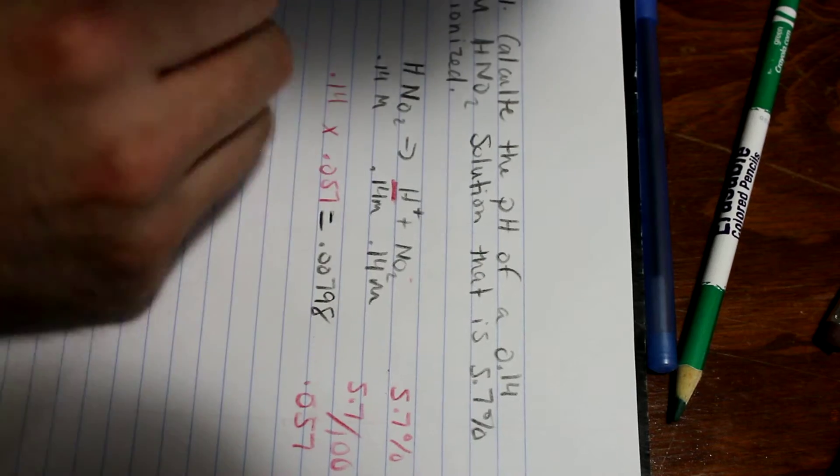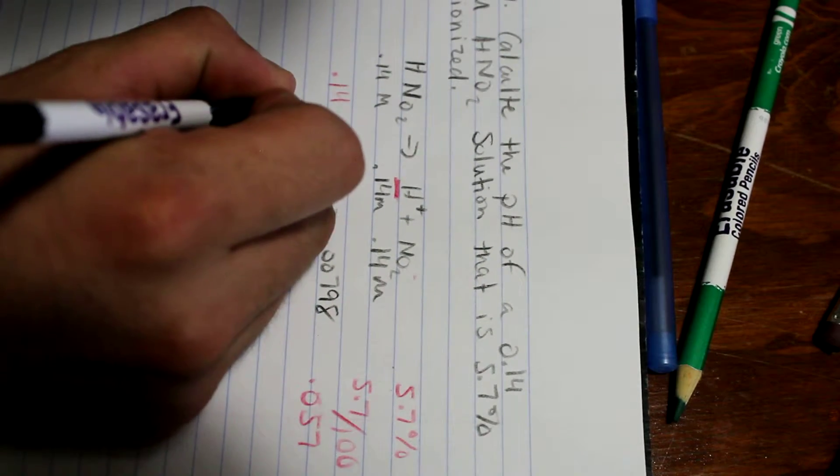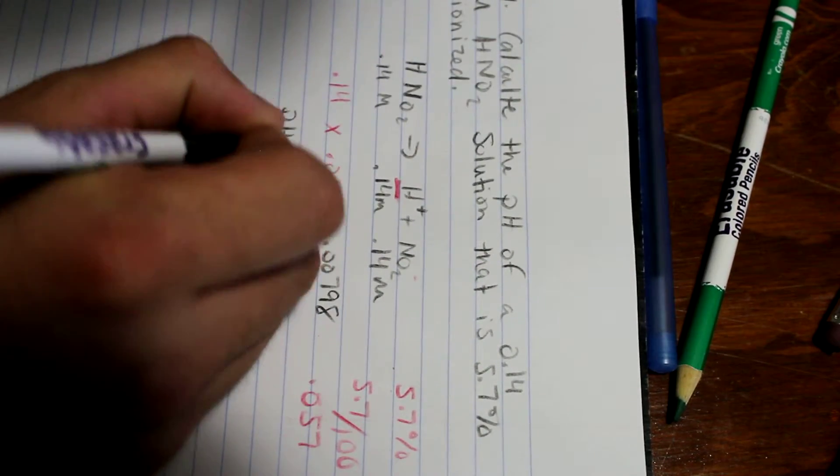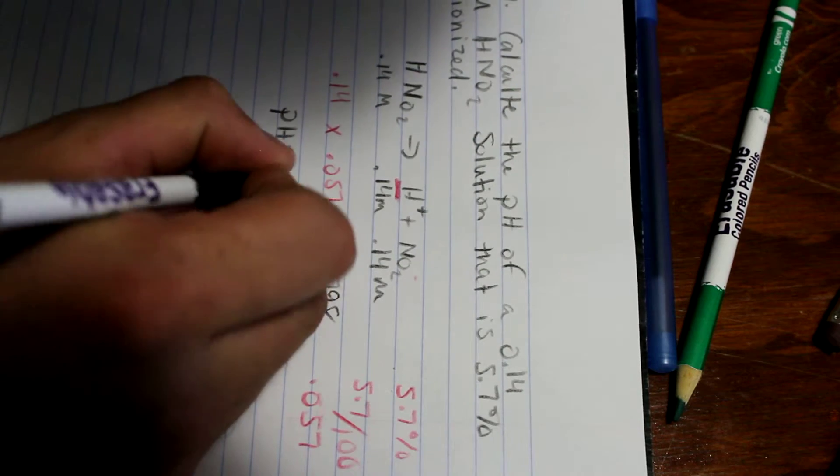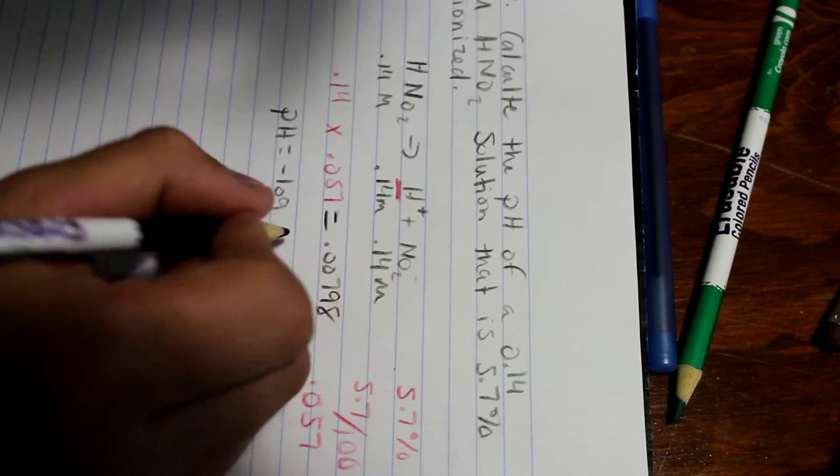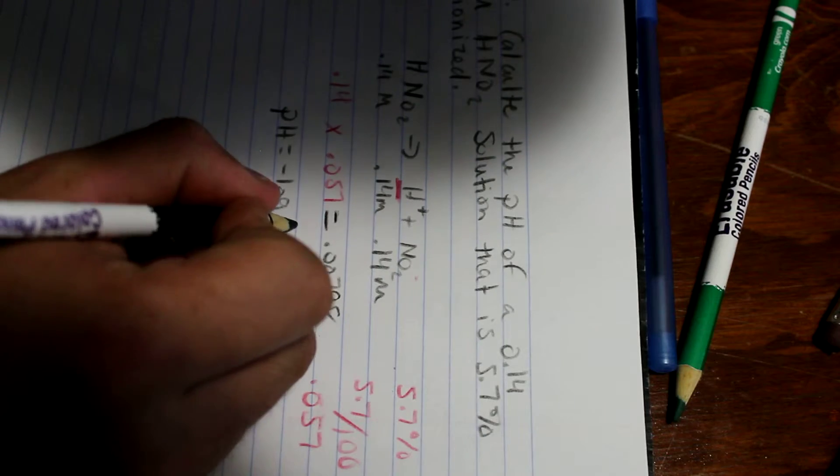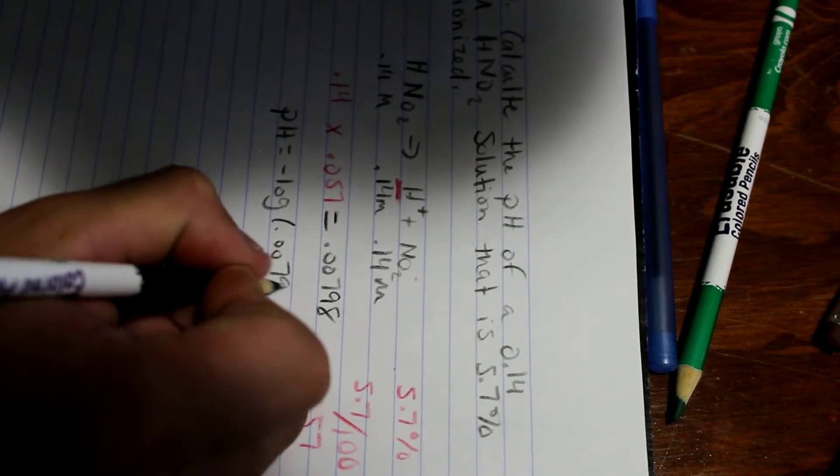Then we use the following equation, which is pH equals minus log of 0.00798.